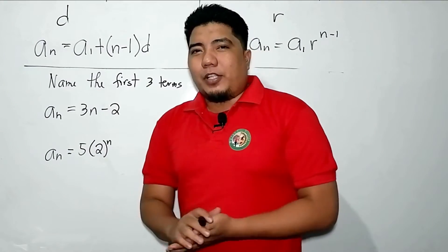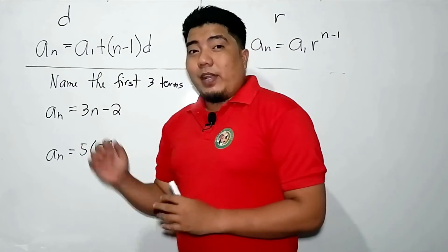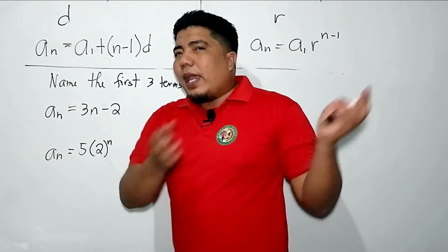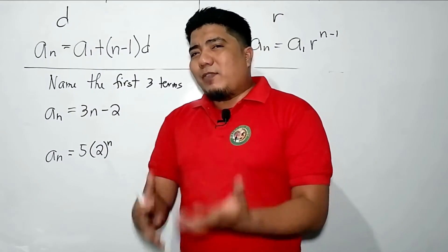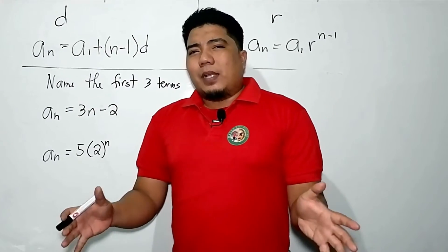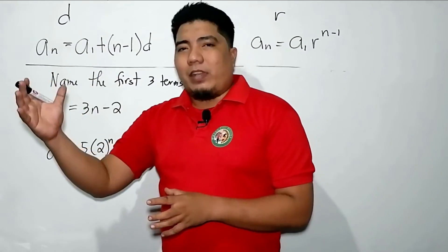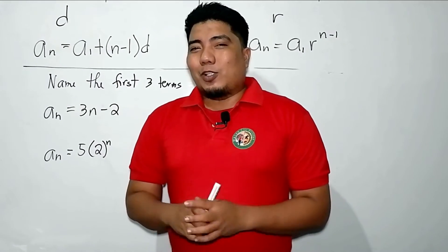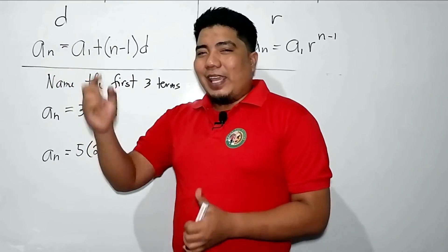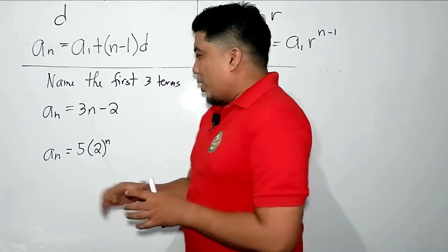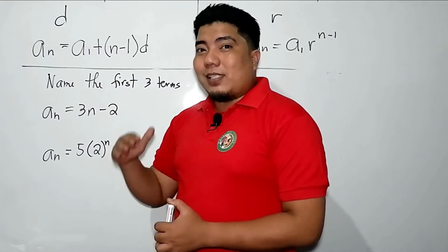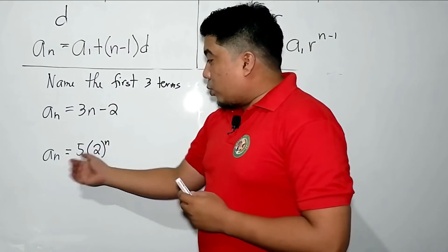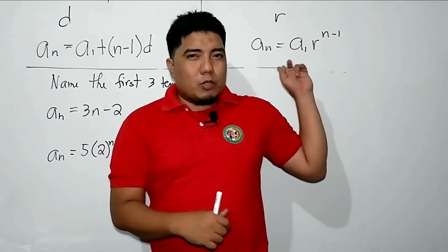Now for the final part: name the first three terms of given nth terms, and determine which is arithmetic and which is geometric. Here's a hint: if the nth term does not have n as a power (exponent), it is mostly not geometric. So if you don't see any exponent of n in the given nth term, it is not a geometric sequence — it is arithmetic. Conversely, if the nth term has n as a power, then it is a geometric sequence.